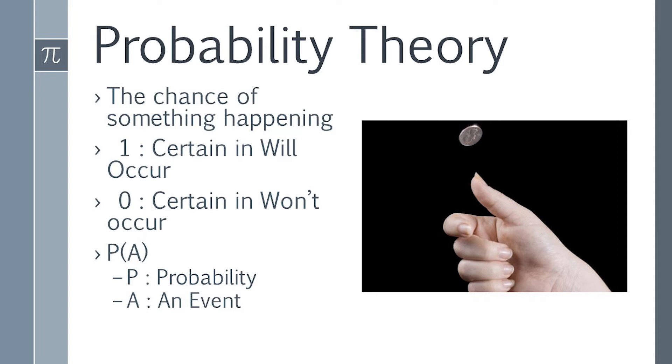For example, coin flip. The probability of heads is 50%. You may want to understand the basics of probability before moving further on machine learning.